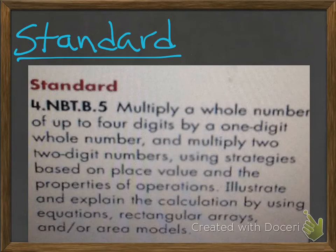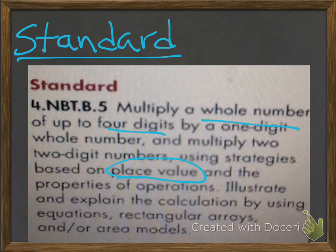Our standard is: multiply a whole number up to four digits by a one-digit whole number, and multiply two-digit numbers using strategies based on place value and the properties of operations. You can illustrate and explain the calculation by using equations, rectangular arrays, and/or area models.